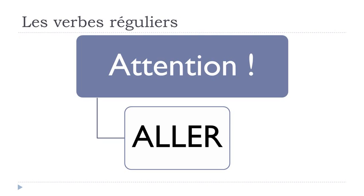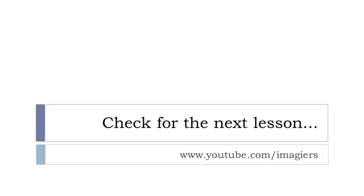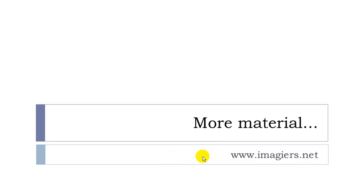Remember that even if the verb ALLER, which we tend to use quite often because it means to go, ends with ER, it is not regular at all. It is the exception ending with ER but it is not regular — we'll have the chance to see the way to conjugate it. But for now, that's it. I hope it was clear. Remember that it was leçon J, so the next lesson can be found there, and the previous lessons as well, and more material on the website. Have a great day, bye-bye!